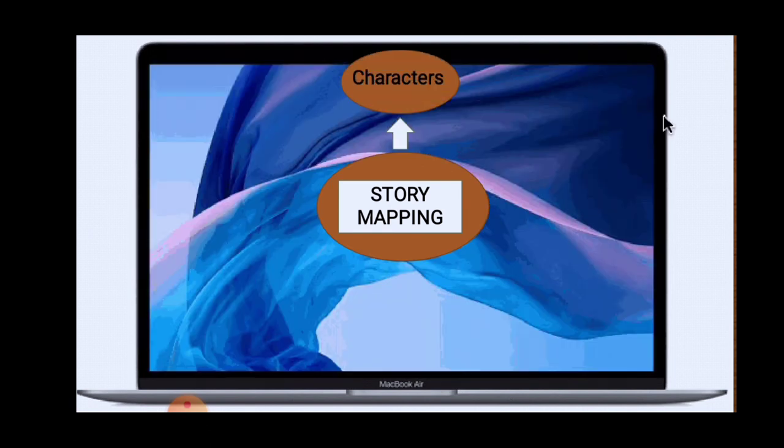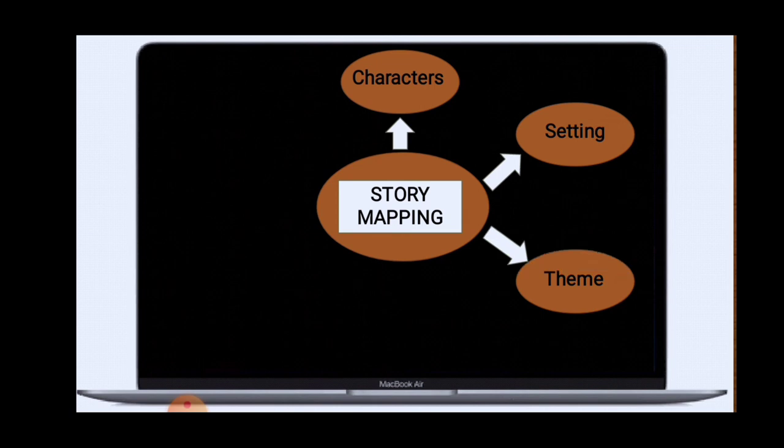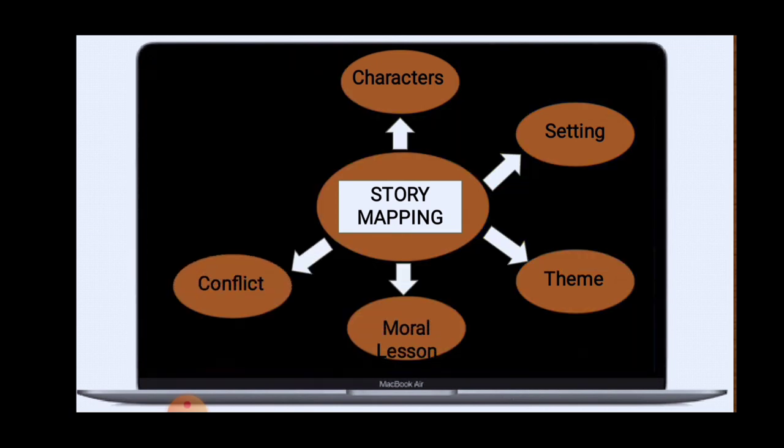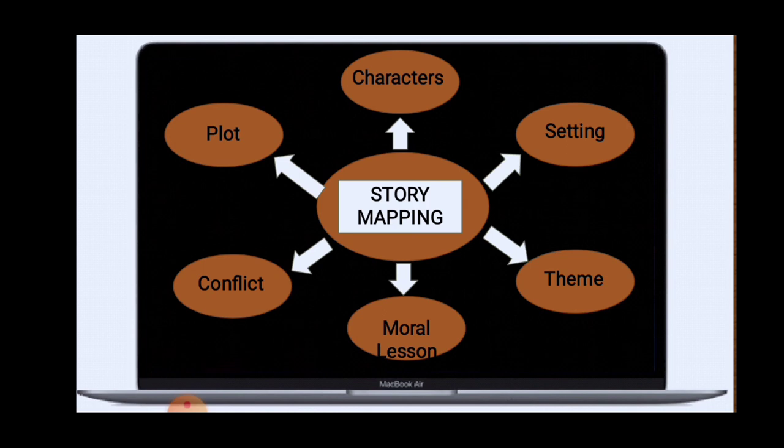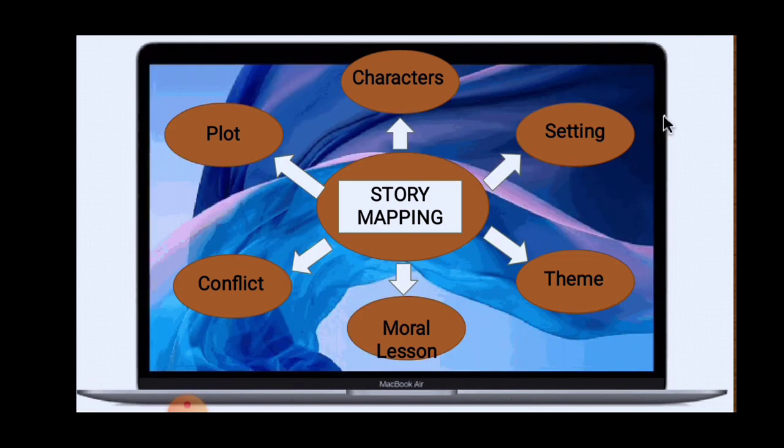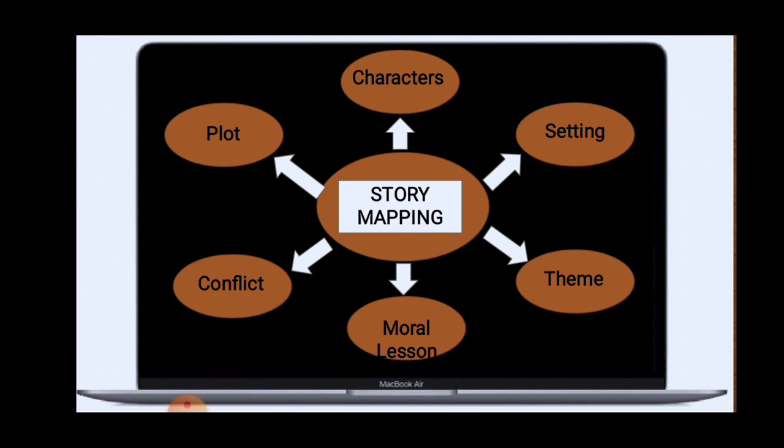Now let's talk about story mapping. Story mapping would help us to determine and understand the story well. It includes characters, setting, theme, moral lesson, conflict, and plot. So all these things are part of elements of fiction, and these are things when making or mapping a story. So again, this is elements of fiction. I hope that you learned something from today's lesson. Thank you and God bless us all.